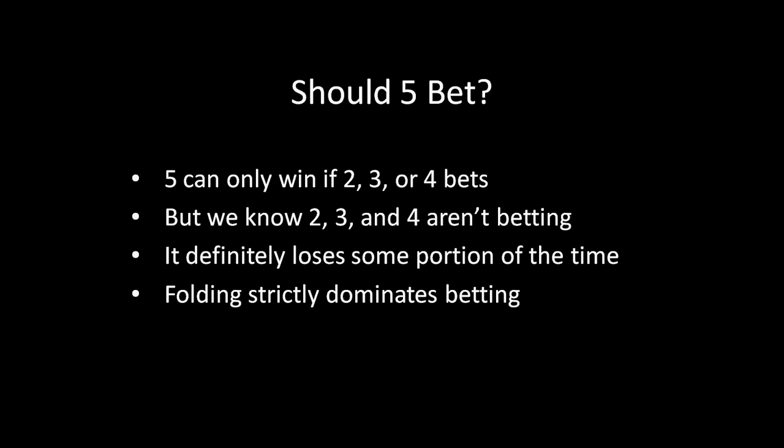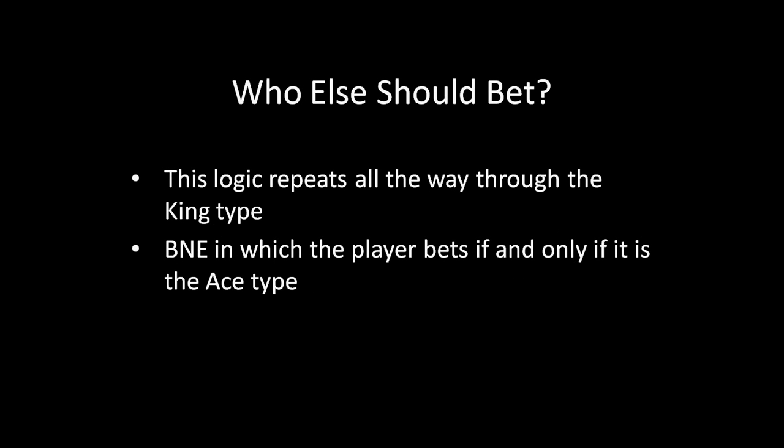You should see where this logic is going — it applies all the way through up to the king type. 2 is not going to bet, which causes 3 to not want to bet, which causes 4 not to want to bet, and then 5, 6, 7, 8, 9, 10, jack, queen, and even the king type doesn't want to bet. The king type wants to bet as long as there's some chance it faces 2 through queen, but all of those types are going to be folding — which means the king type should fold as well. That allows us to arrive at a Bayesian Nash equilibrium where only the ace type bets.